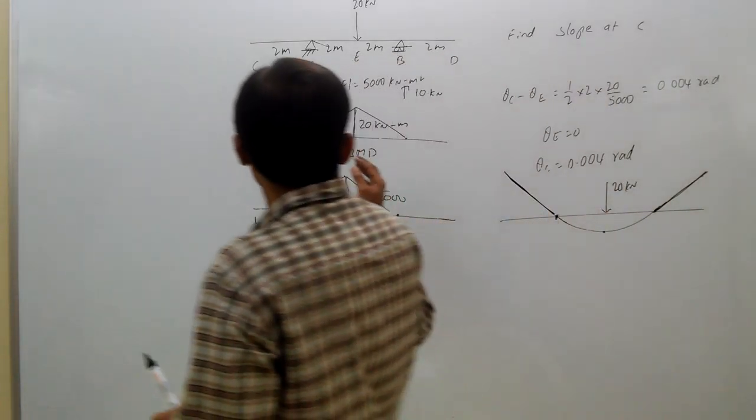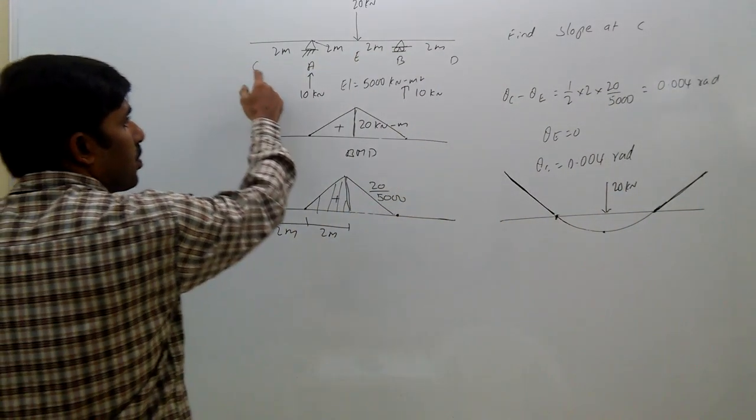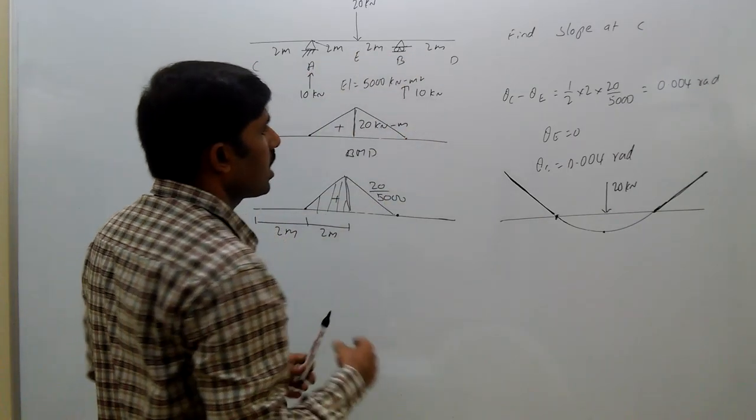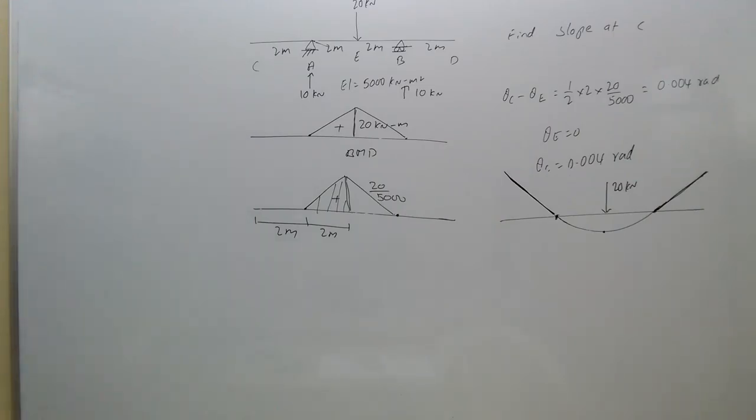At slope, at the point C and A having same slopes, that is 0.004 radians.